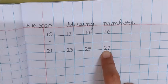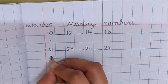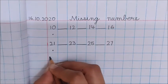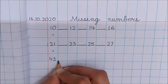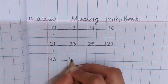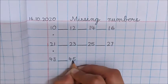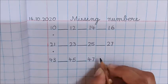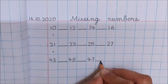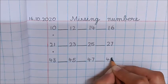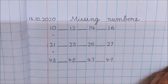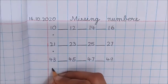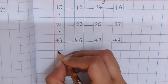Now write down here 43, dash, 45, dash, 47, dash, 49. Now again below 43 put a dot.